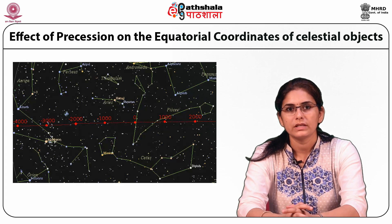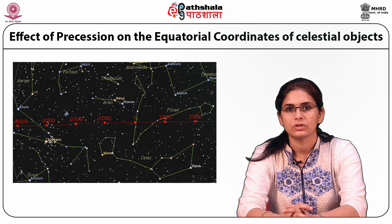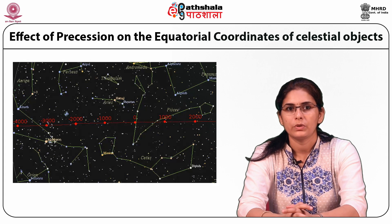About 2,000 years back, the sun was in the zodiac constellation Aries at the time of vernal equinox. Due to the precession of the earth, the sun today is in the constellation Pisces at the time of vernal equinox. As a result, the zodiac signs are no longer in step with the constellations from which they derive their names.